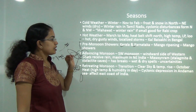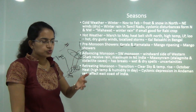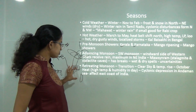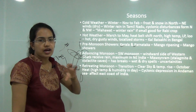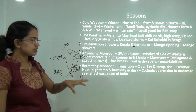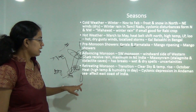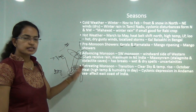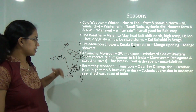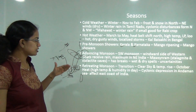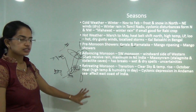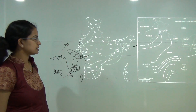During the retreating monsoon, temperatures begin to rise with clear skies in October. The region experiences 'October heat' — high temperature and humidity — leading to cyclonic depression in the Andaman Sea. The monsoon retreats from the Andaman islands by December or January. From the mainland, retreat is by October and November, but incorporating the islands, it extends to December and January.